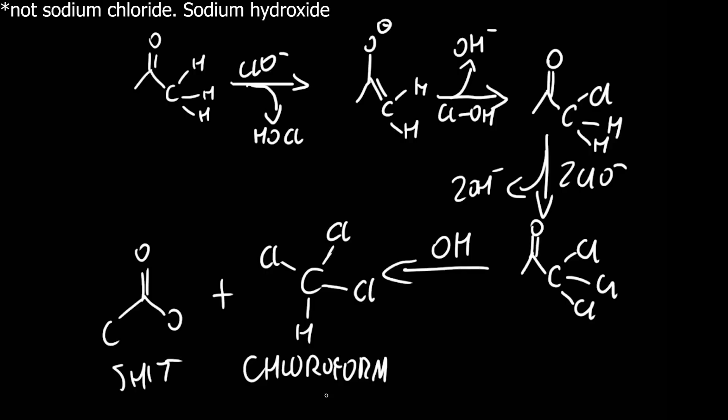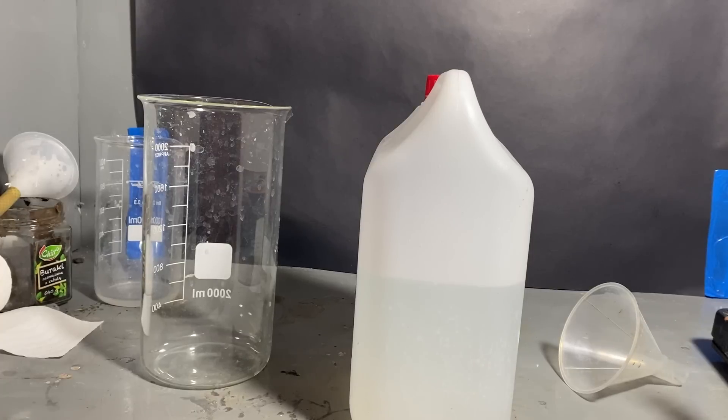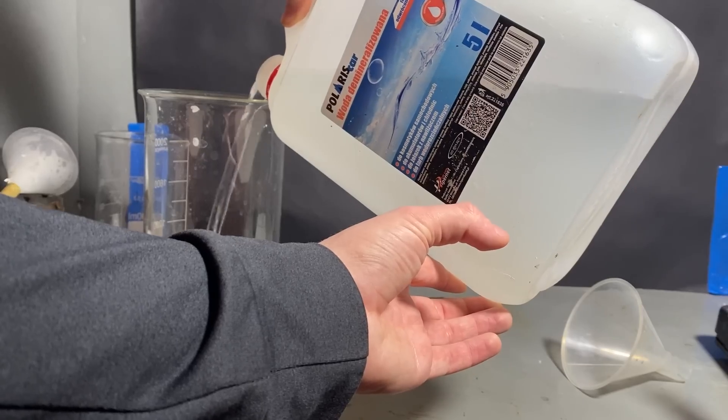You can also make any other halogen form by this reaction as long as you have the bleach equivalent of that halogen. Next morning, after everything reacted, I poured off all the extra water.